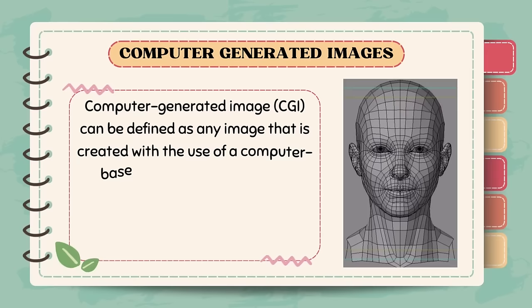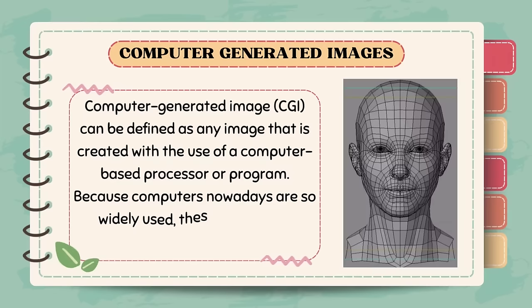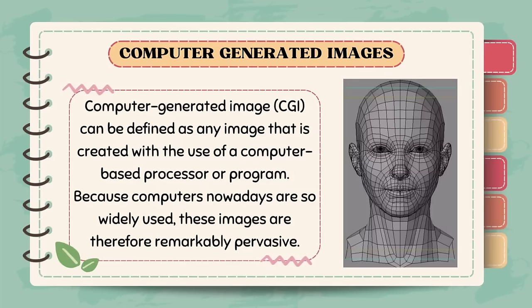Let us now go to Computer Generated Images or CGI. If you want to create original images from scratch, you may make your own illustrations using specialized programs for image generation and manipulation, such as Adobe Illustrator and CorelDRAW. These are designed to run on a desktop computer and laptops, so you would need access to these larger and more complex devices. A CGI, or computer-generated image, can be defined as any image that is created with the use of a computer-based processor or program. Because computers are now widely used, these images are remarkably pervasive.